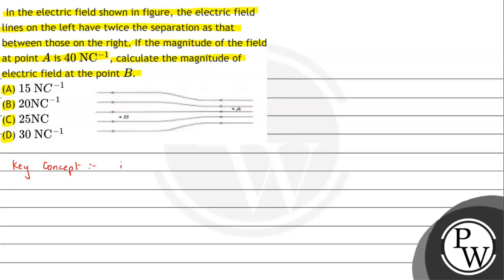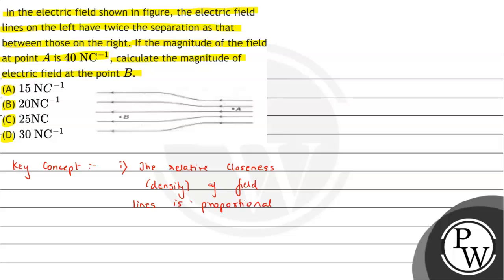We need to understand the important concept of electric field lines. The key property is that the relative closeness — the density — of field lines gives the electric field strength. In other words, the density of field lines is proportional to the electric field strength. This is the important property of electric field lines we need to remember.